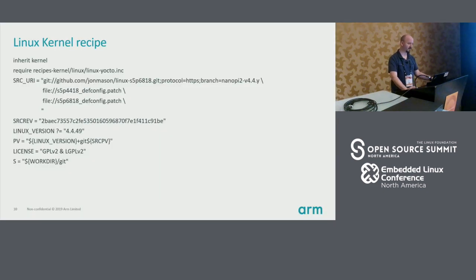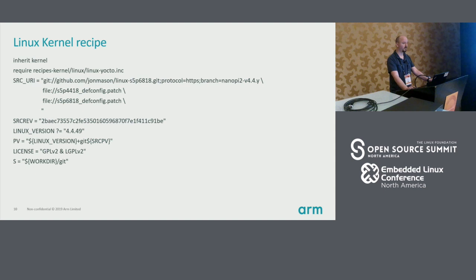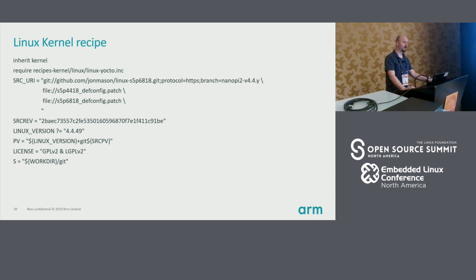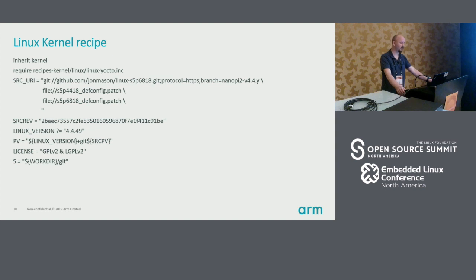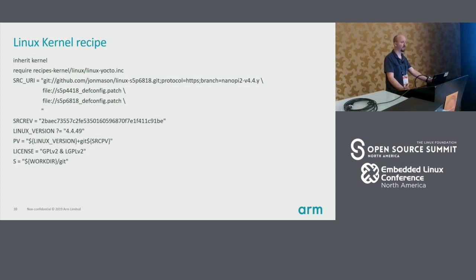So here is essentially the recipes that I did. The kernel recipe is pretty straightforward — you can see that the source URI, that Git tree, is essentially a direct copy of their Git tree, which I did simply in case they decided to move it somewhere else. A couple configs, a source rev, all that stuff. This is pretty standard kernel recipe.